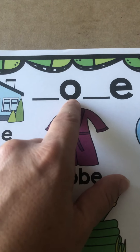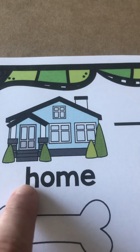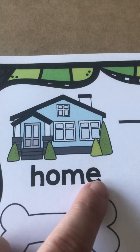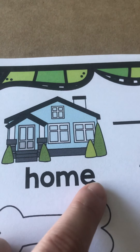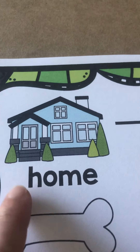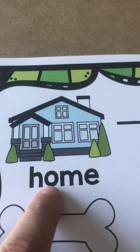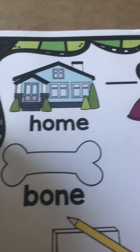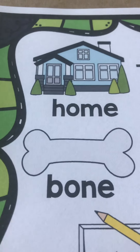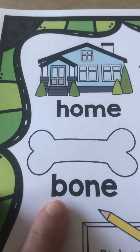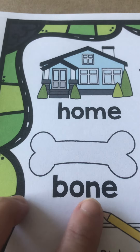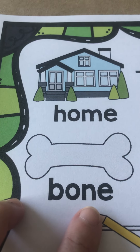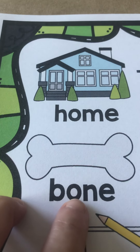So if you look at the first one, H-O-M — because the E is making the O say O, and the E doesn't say anything — this is H-O-M, home. There's a home. This one is B-O-N, bone. See how the E makes the O say O? Bone, like a dog bone.